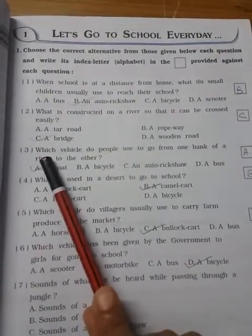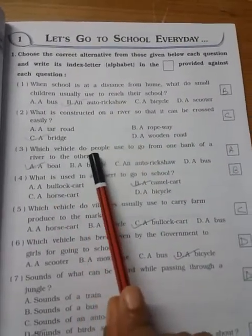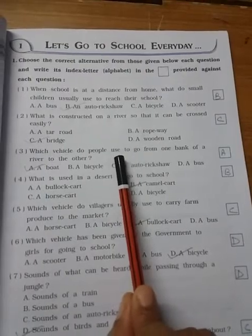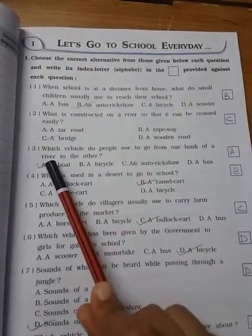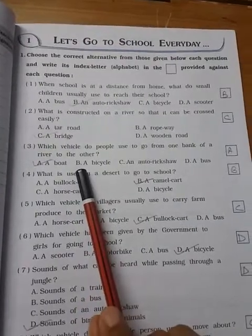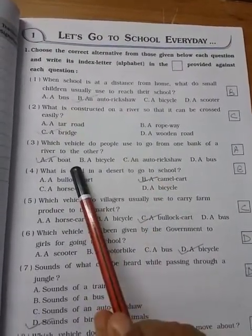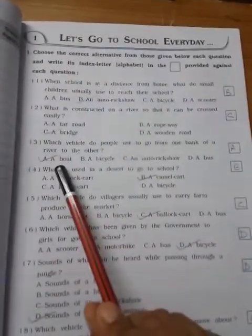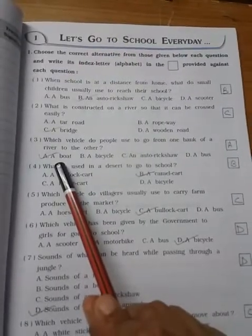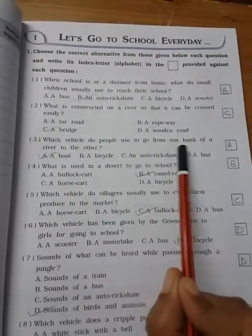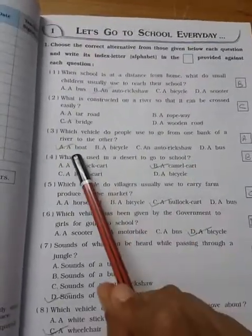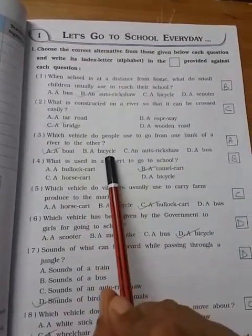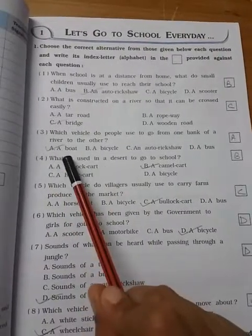Third one: which vehicle do people use to go from one bank of the river to the other? Usually on the river we know. One boat only can cross the river from one side. Bank means the side of the river. From one side to the other side. A boat is the answer.